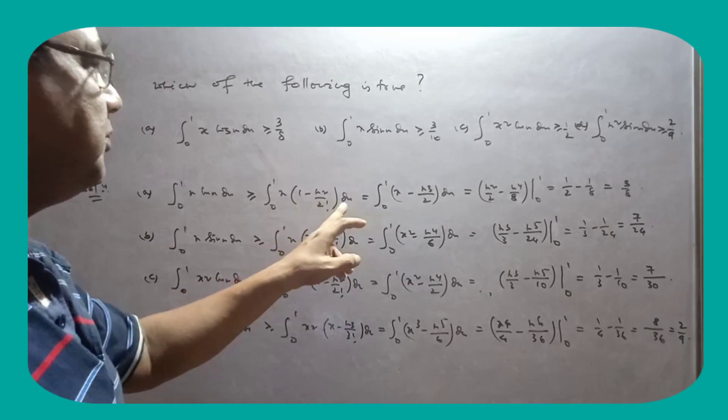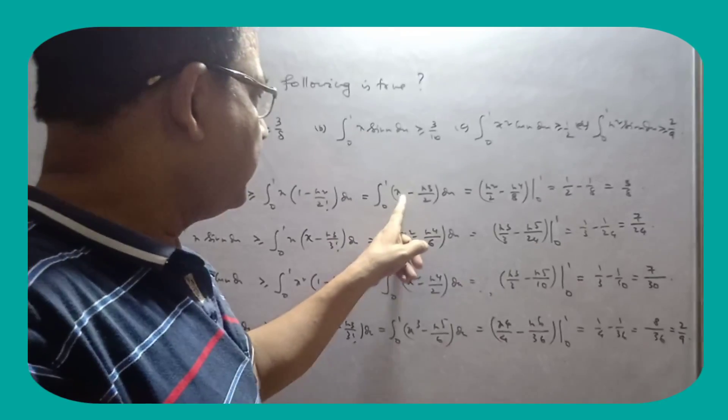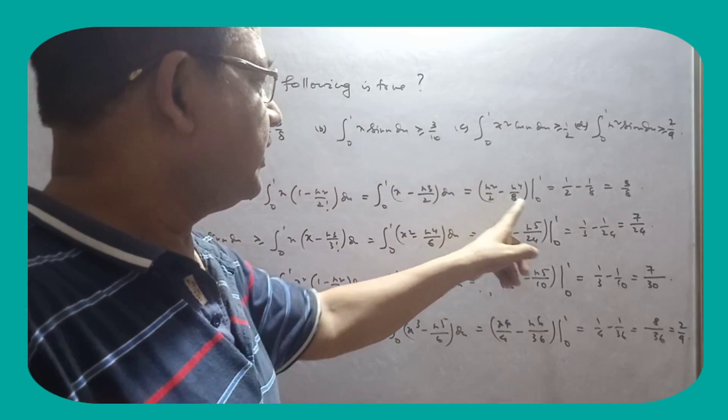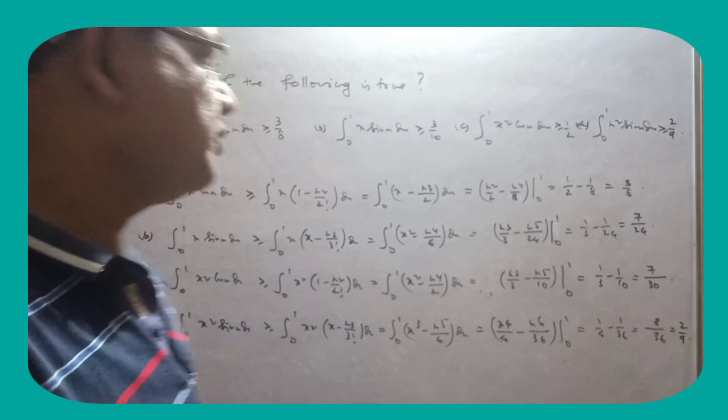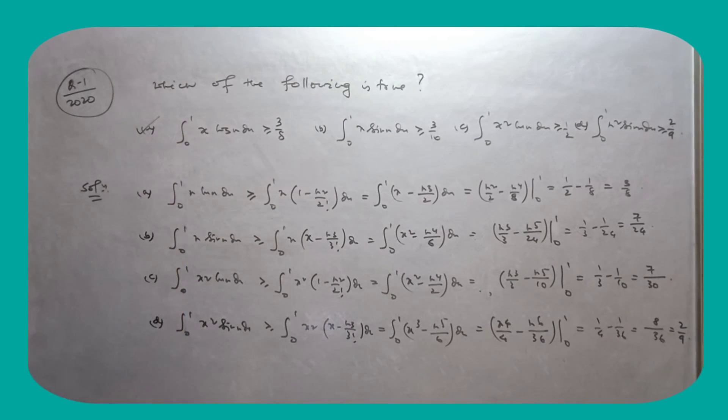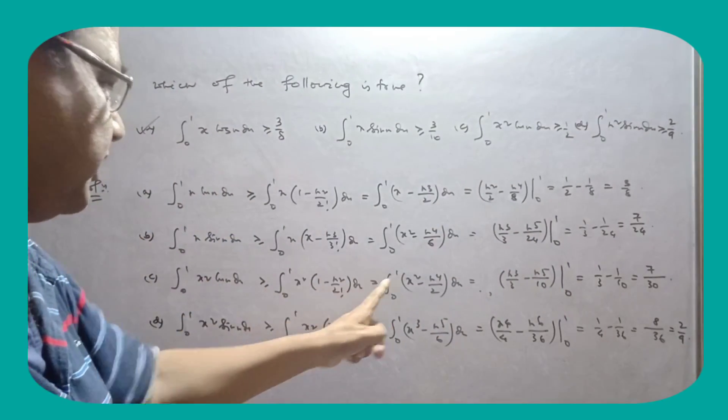Now isko simplify karo x minus x cube by 2. Now isko integrate karo. Integrate karo ke kya kya, m1 by 2 minus 1 by 8, so that is 3 by 8 hai. This option is true. Aisha kakke sare value ko clear, sare functions ko integrate kya.